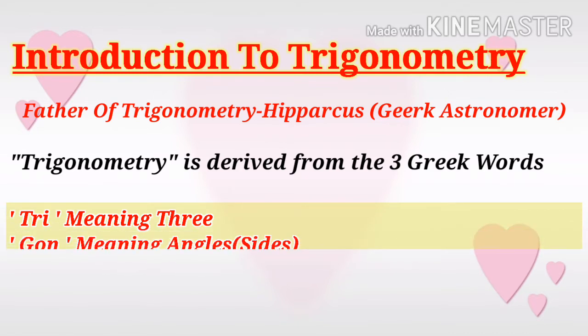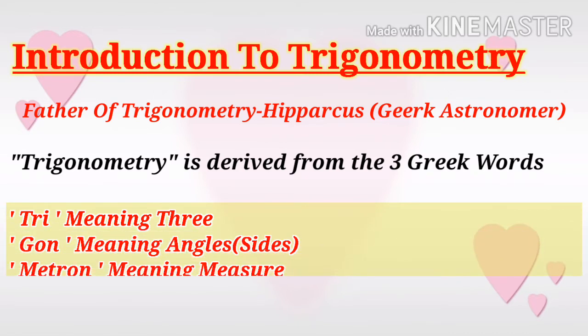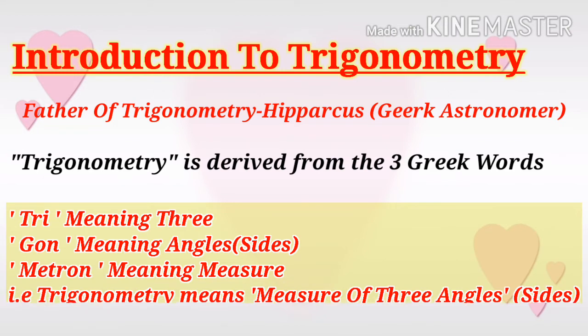The word Trigonometry is derived from three Greek words: Tri meaning three, gon meaning angles, and metron meaning measure. Trigonometry means measure of three angles or sometimes measure of three sides.